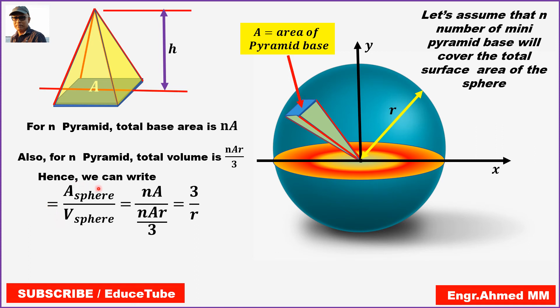So very interesting point here: A-sphere divided by V-sphere equal to 3 by r. So from this equation, easily we can find A-sphere. How? Total surface area of a sphere equal to A-sphere equals 3 by r multiplied by V-sphere.